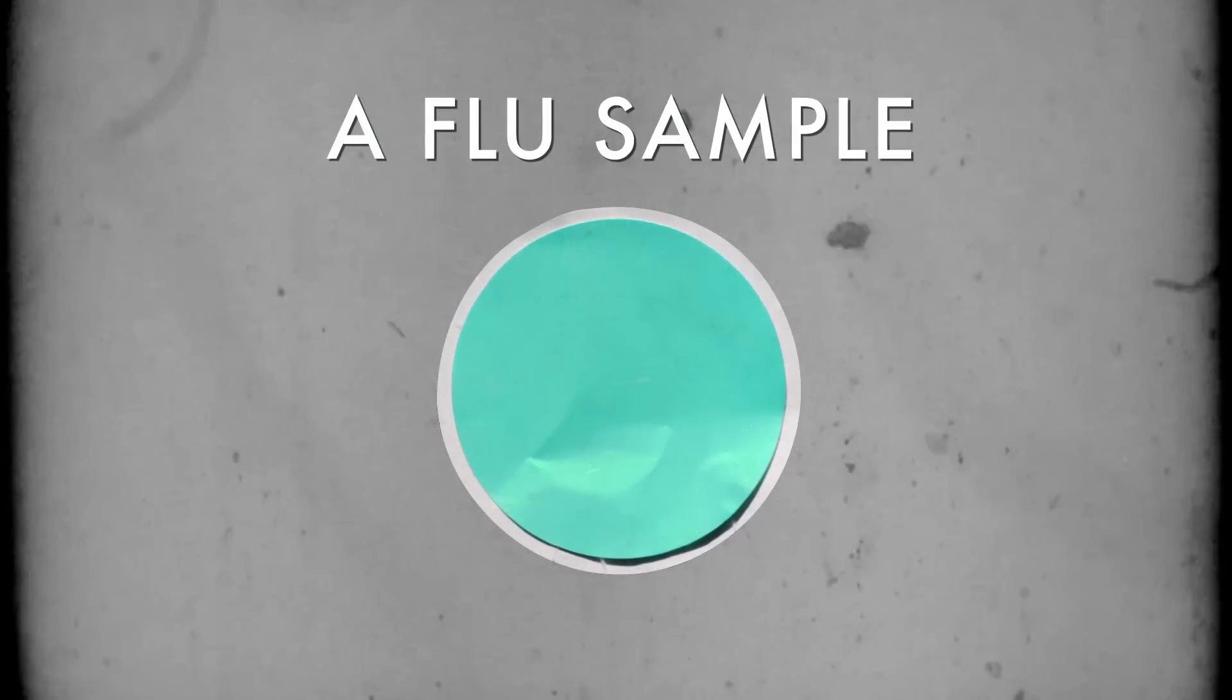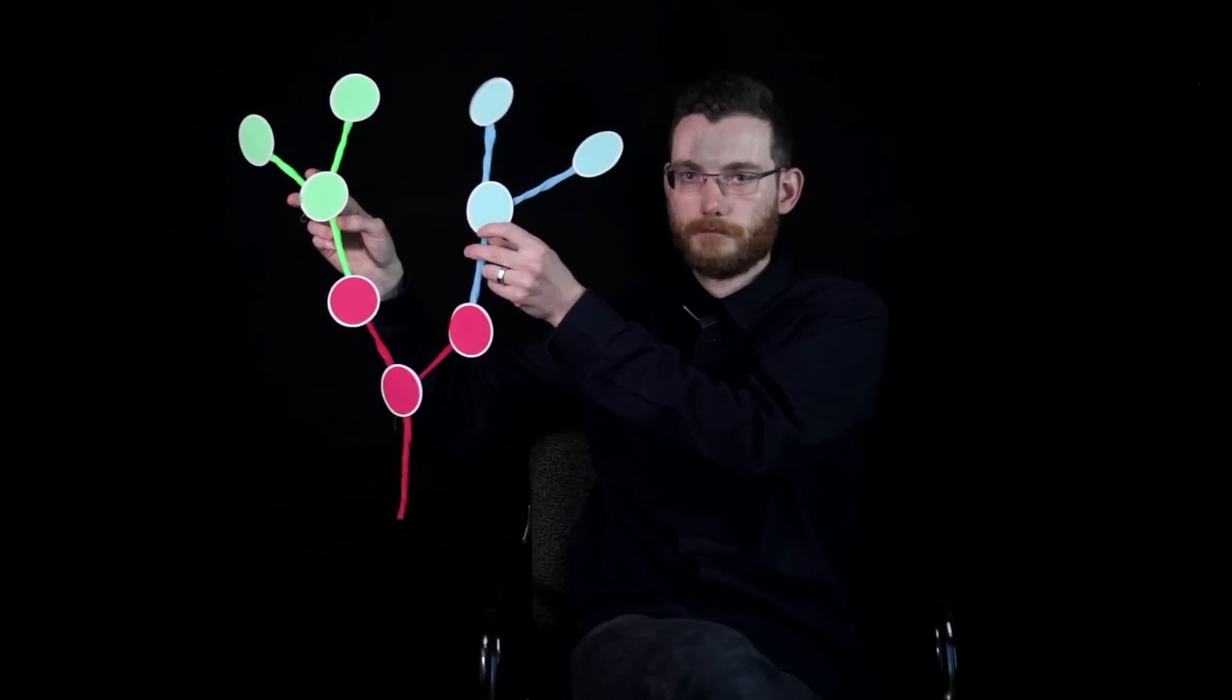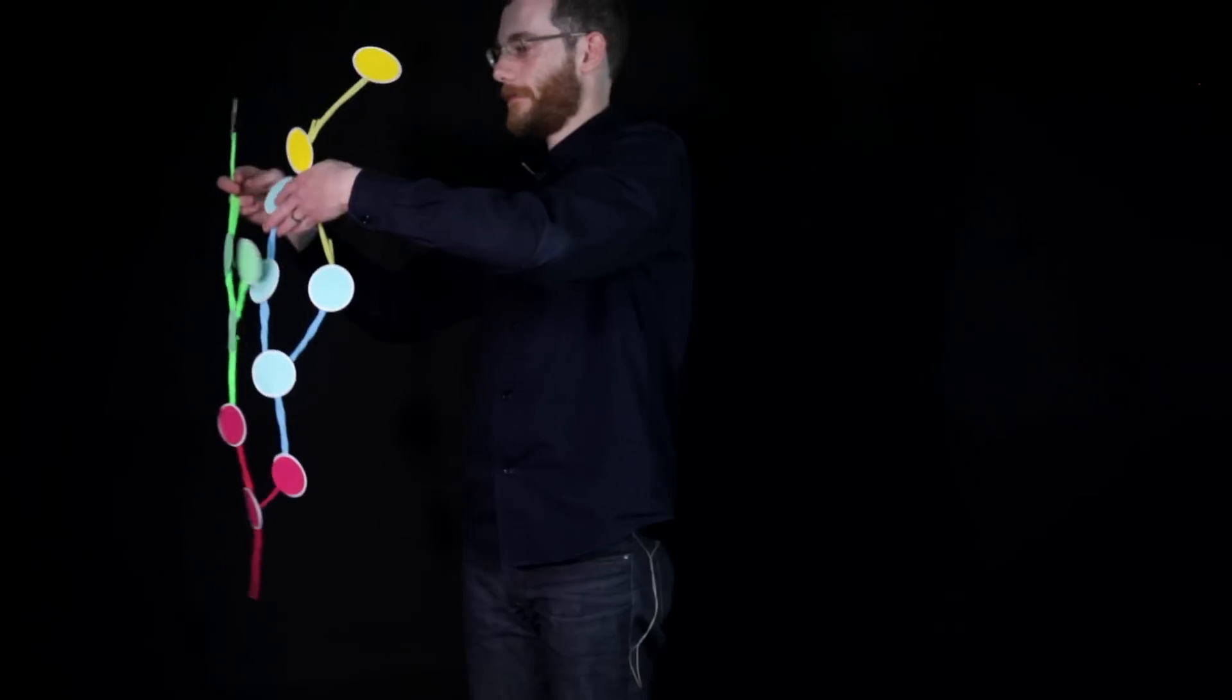Think of each circle as a flu sample. Here's the virus. Both of these viruses share a common ancestor here. This virus actually seeded kind of two infections. Flu mutates. So mutation has occurred. Subsequent people infected. And this goes on and on.